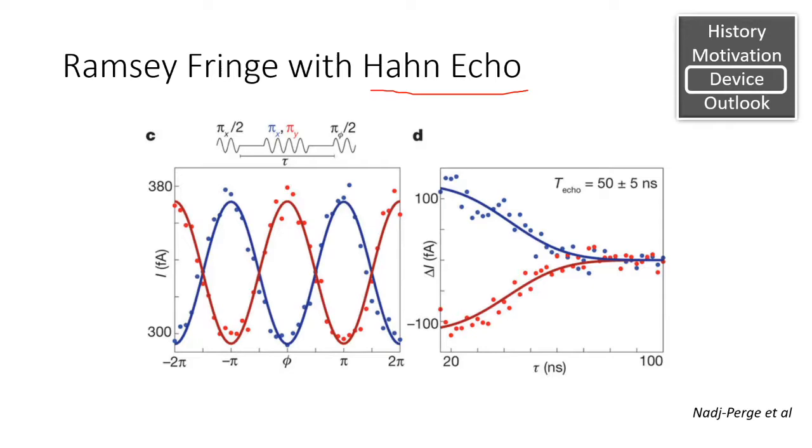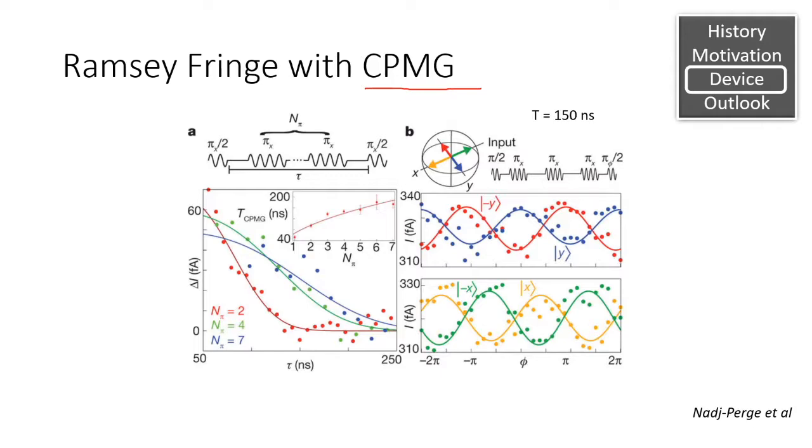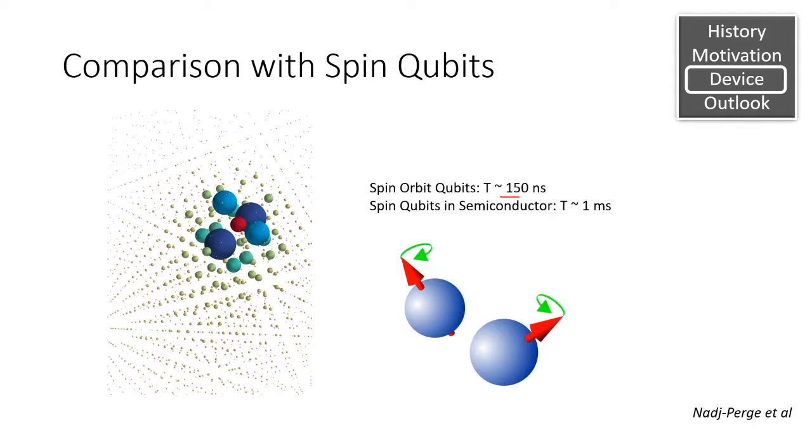However, with Hahn Echo we are able to increase the decoherence time to about 50 nanoseconds. And with CPMG we can obtain coherence times of up to 150 nanoseconds. Now I won't go into what this or the Hahn Echo is right now, but the gist of it is that there are a series of manipulations of spin that can decouple the qubit from the surrounding noise.